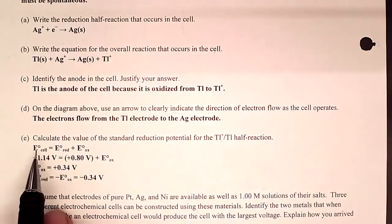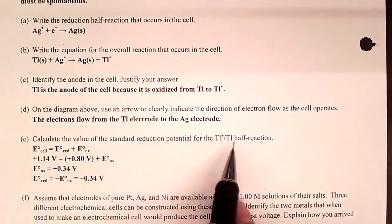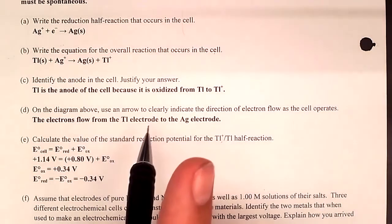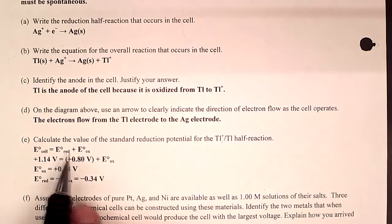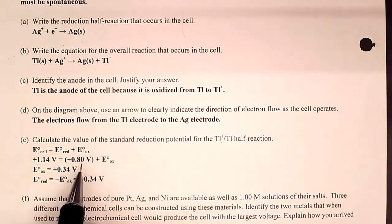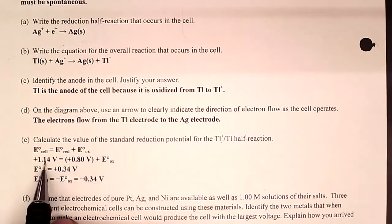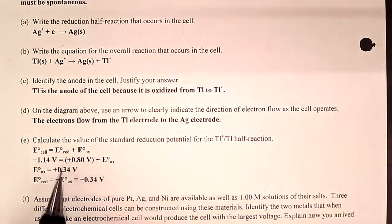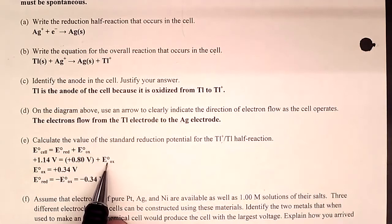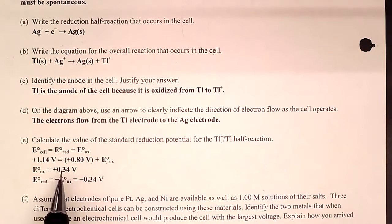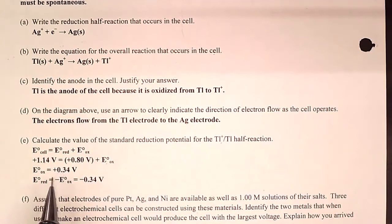This part is tricky: instead of asking for the standard cell potential, the problem asks for the reduction potential of the thallium half-reaction. The overall cell potential equals the reduction potential plus the oxidation potential. We're given the reduction potential of silver from the problem's intro paragraph. Setting the thallium oxidation potential as x, we subtract to solve for x — but that gives us the oxidation version. Since they ask for the reduction potential, we flip the sign.